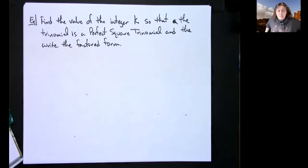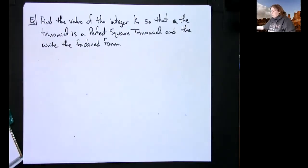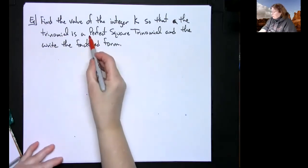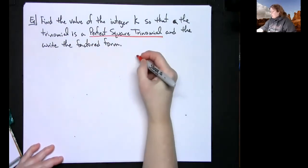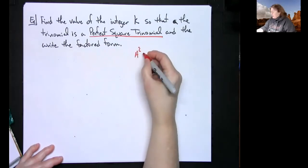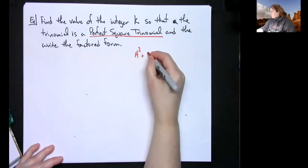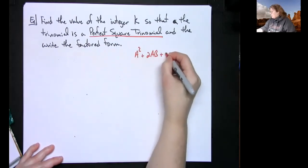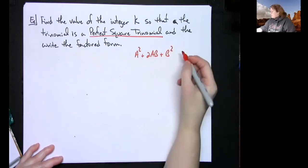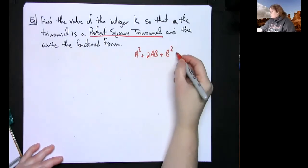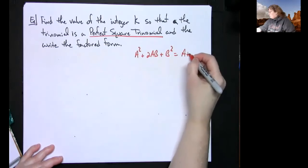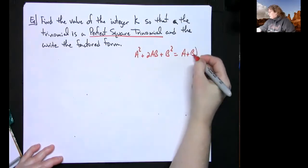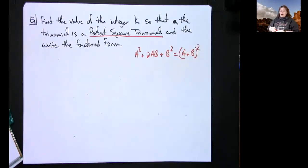Here they mention the perfect square trinomial. I'll write down a squared plus 2ab plus b squared, and this is going to be equal to — I'll do it horizontally — a plus b, quantity squared.